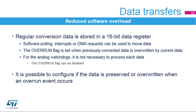The ADC conversion result is stored in a 16-bit data register. The system can use CPU polling, interrupts, or the DMA controller to make use of the conversion data. An overrun flag can be generated if data is not read before the next conversion data is ready. In case of overrun, either the new sample is dropped or the previous sample is overwritten.